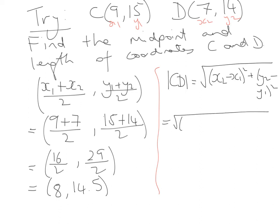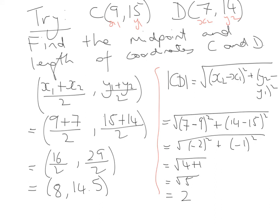So x2 equals 7, x1 equals 9 and that's be squared, plus y2 which is 14 minus y1 which is 15, all to be squared. Again you can just pop all that into your calculator if you like, otherwise it's going to be (-2)² plus (-1)². That's going to give me the square root of 4 plus 1 which gives me the square root of 5 which equals 2.24, and that is the distance between C and D.